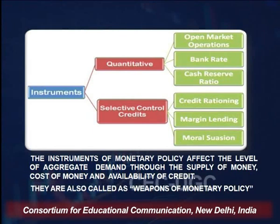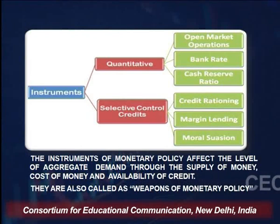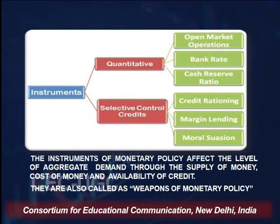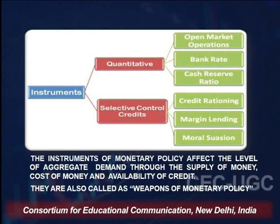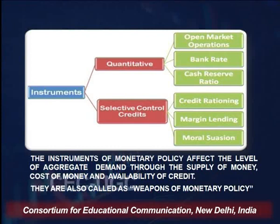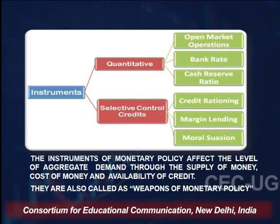Quantitative methods directly control the quantity of money supply in the economy. The different instruments used under quantitative methods are open market operations, bank rate, cash reserve ratio (CRR), and statutory liquidity ratio (SLR). These are the main instruments of quantitative methods.